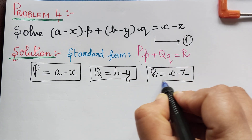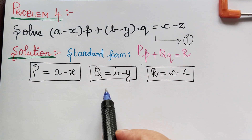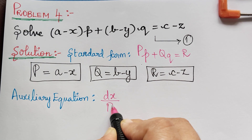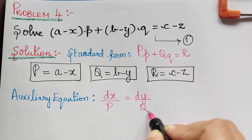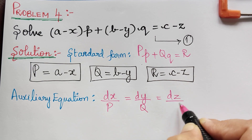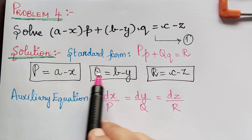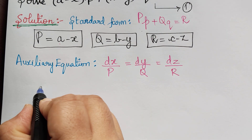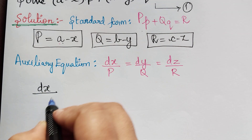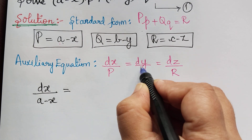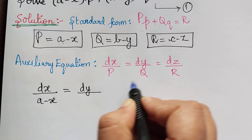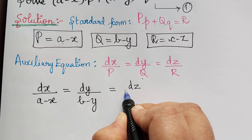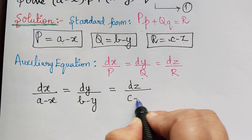So we have identified P, Q, R. Next we shall write the auxiliary equation. The auxiliary equation is given by dx by P is equal to dy by Q is equal to dz by R. Substituting P, Q, and R, we obtain dx by A minus X is equal to dy by B minus Y and that is equal to dz divided by C minus Z.